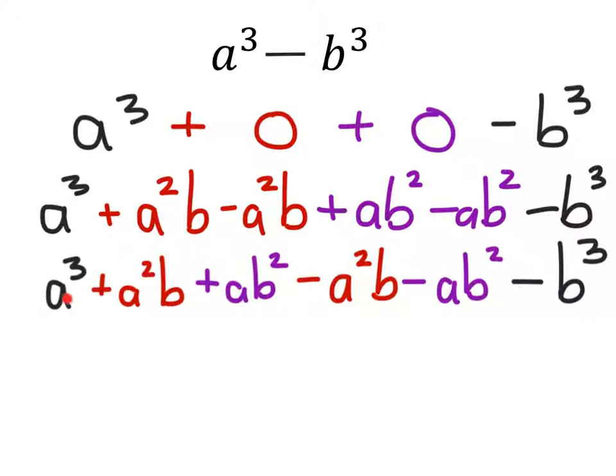Now on this first half, on these first three, if I factor out an a, then it will give me a new expression, which specifically would be a squared plus ab plus just b squared. Now if I factor out from these last three terms, specifically a negative b, to change all these to positives...